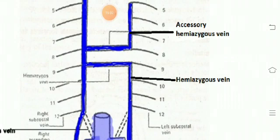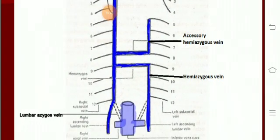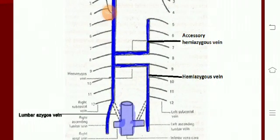In short: on the right side, the azygos system of veins is present. On the left side, the accessory hemiazygos and hemiazygos system of veins are present.